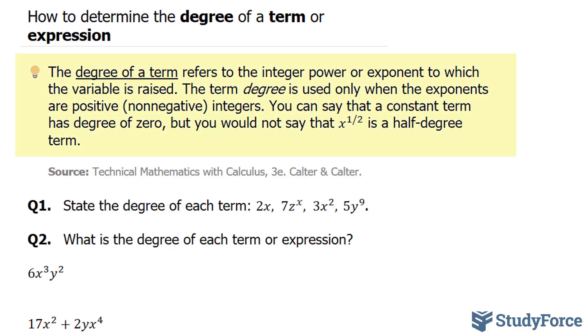The degree of a term refers to the integer power or exponent to which the variable is raised. The term degree is used only when the exponents are positive, in other words, non-negative integers.